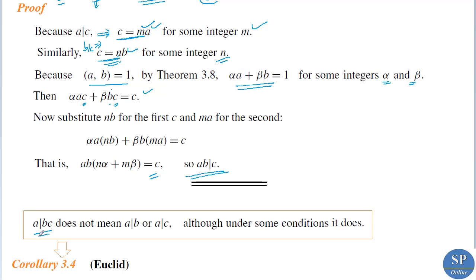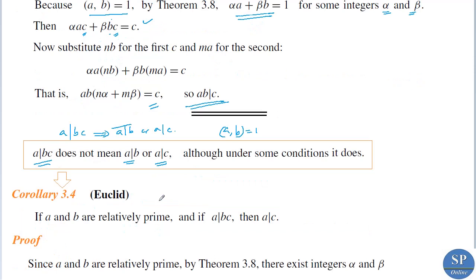If a divides bc, does it imply a divides b or a divides c? This is also not always true — a divides bc does not imply a divides b or a divides c. It works only when GCD(a, b) equals 1. Corollary (Euclid's lemma): if a and b are relatively prime, that is GCD(a, b) equals 1, and if a divides bc, then a divides c.